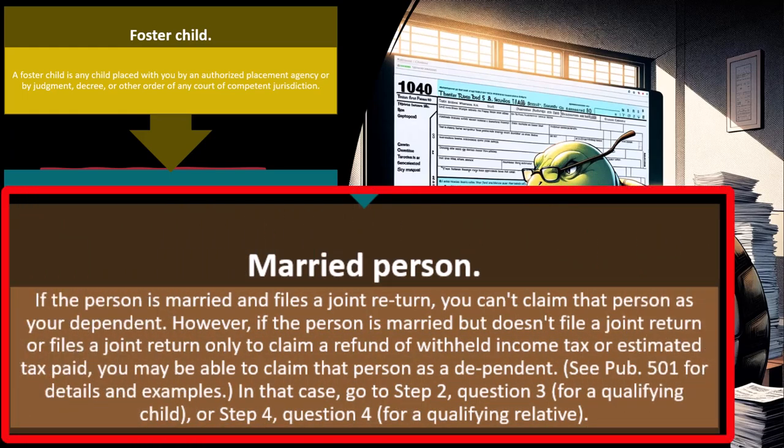Married person: if the person is married and files a joint return, you generally can't claim that person as your dependent. However, if the person is married but doesn't file a joint return, or files a joint return only to claim a refund of withheld income tax or estimated tax paid, you may be able to claim that person as a dependent — for example, if they only filed to recover withheld W-2 income. See Publication 501 for details and examples, then go to step two question three for qualifying child, or step four question four for qualifying relative.